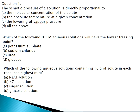Question 1: The osmotic pressure of a solution is directly proportional to — the formula for osmotic pressure is π = CRT. The options are the molecular concentration of solute, the absolute temperature at a given concentration, and the lowering of vapor pressure. Since osmotic pressure depends on both concentration and absolute temperature, all of the above is the correct answer.